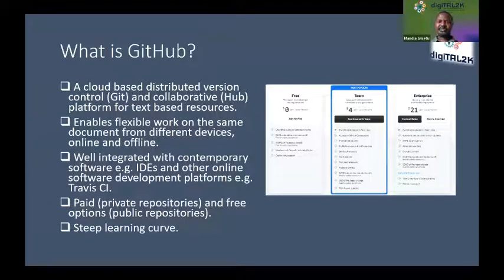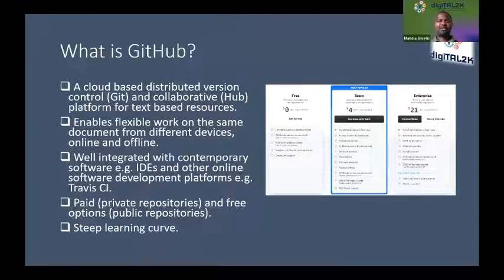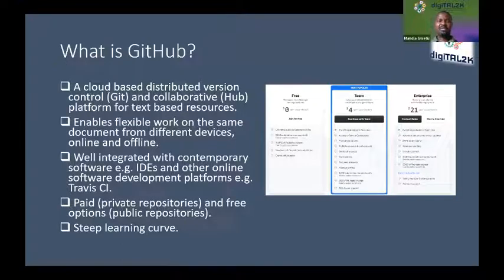Whatever text document there is — whether it's a web page or a software code document — it's important to have versions associated with it so we can have a fallback mechanism. Then there's the hub side of things, because software development is essentially a team effort, a collaborative effort. GitHub is like a social network in which people can dialogue around code and share ideas. It enables flexible work, very relevant in these days of remote working, allowing you to work from different devices whether online or offline.